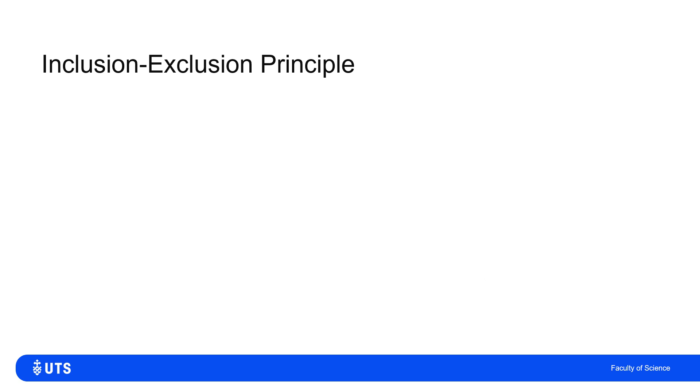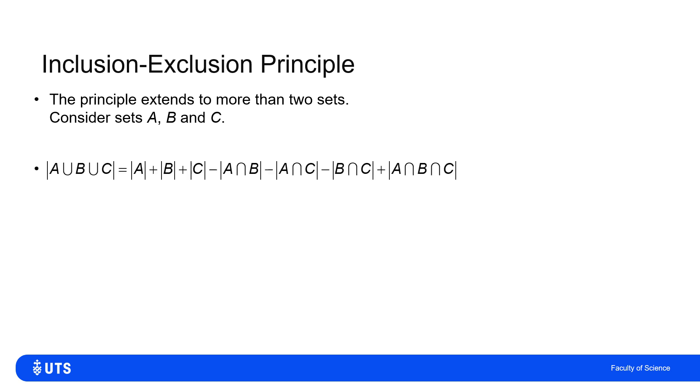And this idea extends up to more than two sets, gets a little bit more complicated. But if I've got three sets A, B and C, then the cardinality of A union B union C is the cardinality of A plus the cardinality of B plus the cardinality of C.